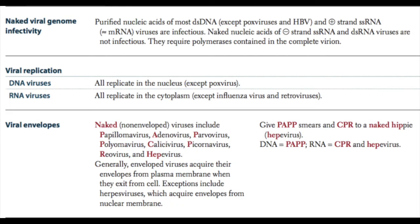Purified nucleic acids from most double-stranded DNA viruses and most positive-strand ssRNA viruses are infectious, meaning they alone can produce new viruses because host cell machinery can read them. The exceptions are poxviruses and hepatitis B virus. In contrast, minus-strand genomes cannot be read by host cellular machinery and thus require the virus to carry proteins that allow proper genome processing to make new viral particles. All viruses are haploid — one copy of their genome — except retroviruses.